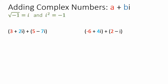So here we have 3 plus 2i, that's a complex number, and I have 5 minus 7i, that's another complex number, and we're going to talk about how to add these two complex numbers together. I've made these numbers color-coded to kind of match up here and show you how they are in the form a plus bi.